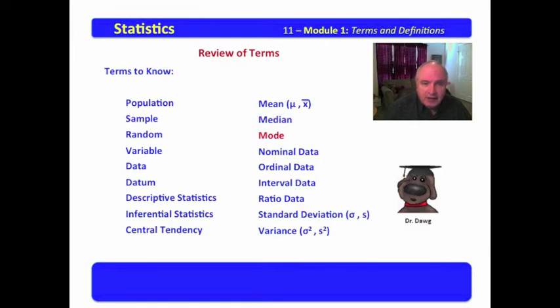Mode, that is the value which occurs most often. Nominal data are data which may be grouped. Ordinal data are data which may be ranked. Interval data are data which we have equal spacings between the data.